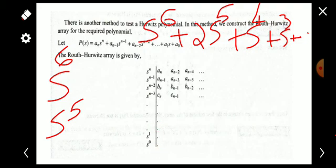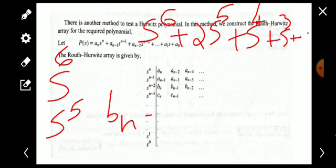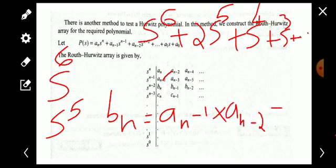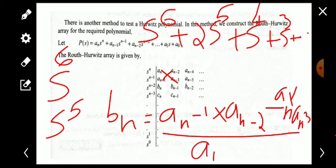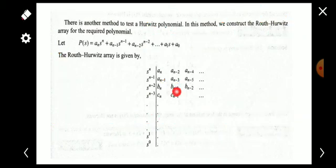You may be wondering where the b_n, b_(n-1), etc. elements come from. The formula for b_n is: b_n = [a_(n-1) · a_(n-2) − a_n · a_(n-3)] / a_(n-1). So it is a_(n-1) times a_(n-2), minus a_n times a_(n-3), all divided by a_(n-1).